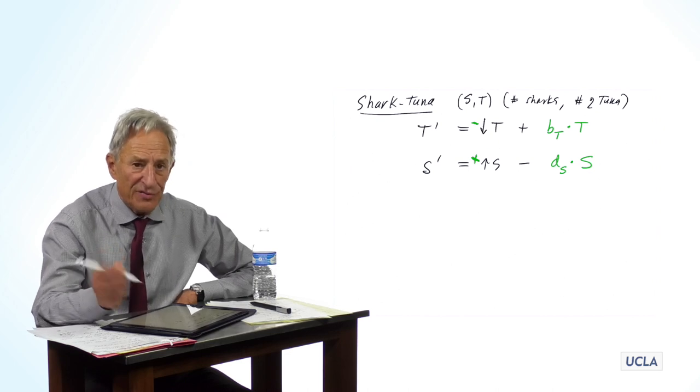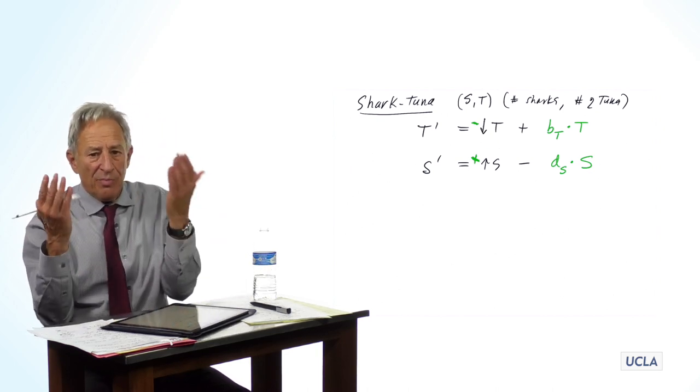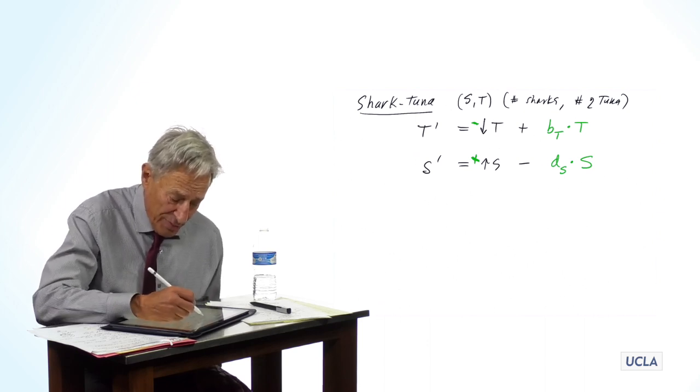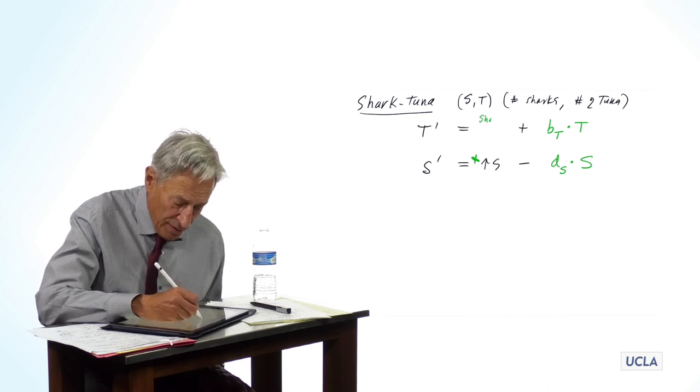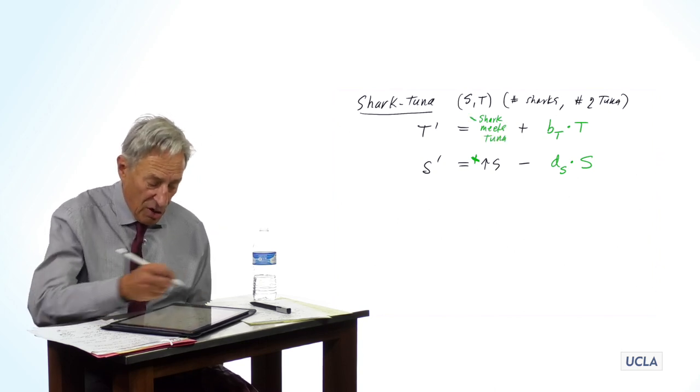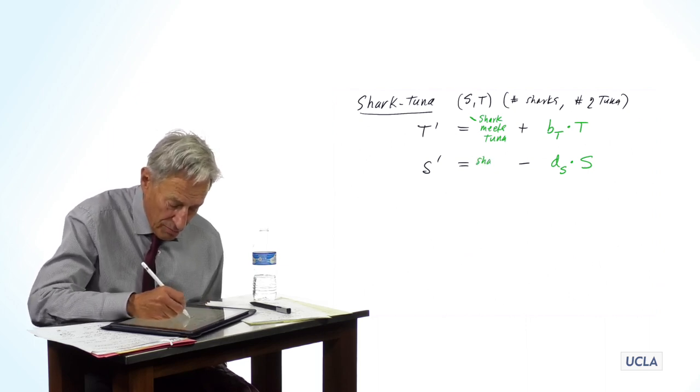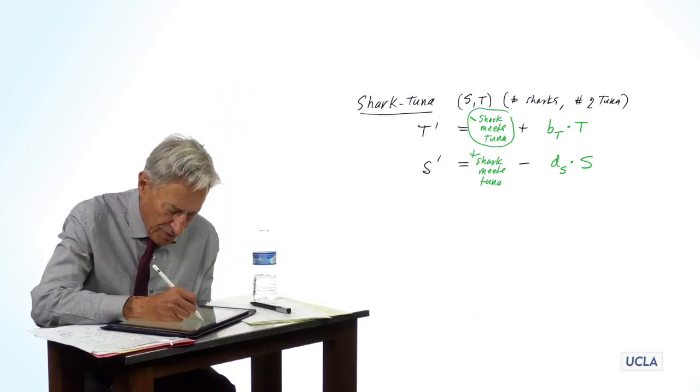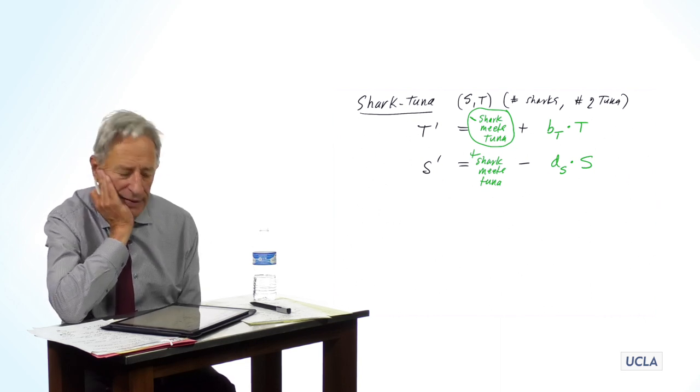Because those two terms depend not just upon T and upon S, but upon the encounters between T and S. What makes T go down is encounters between sharks and tuna. Or, to put it simply, shark meets tuna is what makes tuna go down. And shark meets tuna is what makes sharks go up. But now we have to scratch our heads a little bit and figure out how to write this shark meets tuna term. So, first of all, let's look at the shark meets tuna term here in the tuna equation.